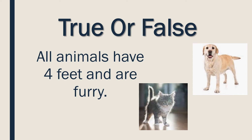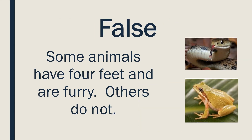True or false: all animals have four feet and are furry? That statement is false. Some animals have four feet and are furry, but not all. For example, the snake at the top right has scales and slithers — it doesn't use feet. Below it is a frog, which has four limbs but no fur, just its skin.